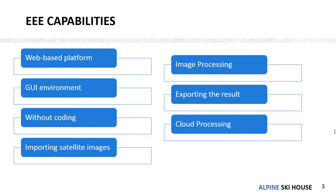One of the most important advantages of Google Earth Engine Explorer is being cloud-based. You don't need to download large amounts of data or have a powerful system to process satellite images. You can do it with a simple computer and process all your data in a cloud-based environment.